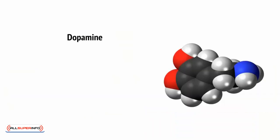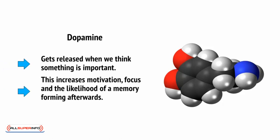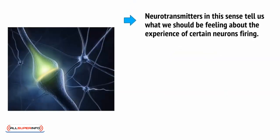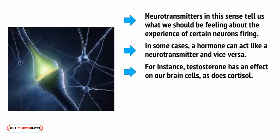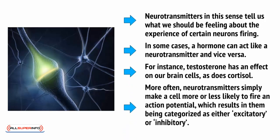Meanwhile, dopamine is a neurotransmitter that gets released when we think of something important. This increases motivation, focus, and the likelihood of a memory forming afterwards. Neurotransmitters in this case tell us what we should be feeling about the experience of certain neurons firing. In some cases, a hormone can act like a neurotransmitter and vice versa. For instance, testosterone has an effect on our brain cells, as does cortisol. More often, neurotransmitters simply make a cell more or less likely to fire an action potential, which results in them being categorized as either excitatory or inhibitory.